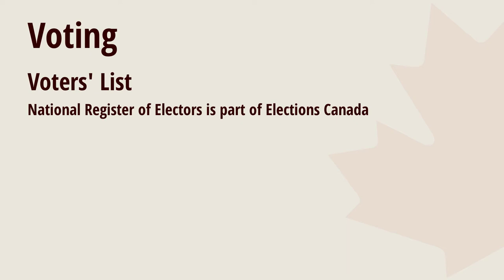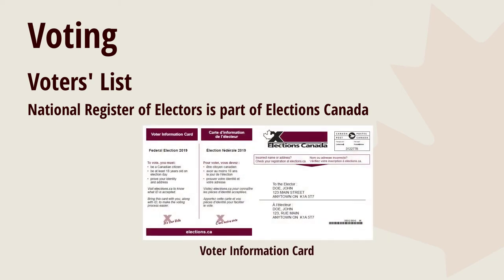When an election is called, Elections Canada mails out voter information cards to everyone on the list. The card has all the information you need about where to go and when to vote on election day. There is a number to call if you need any help, like an interpreter or if you have special needs.